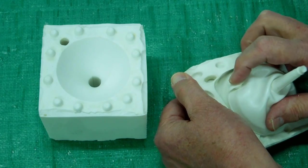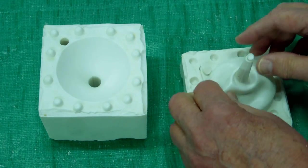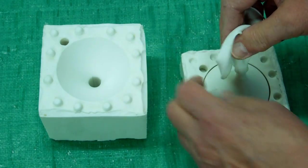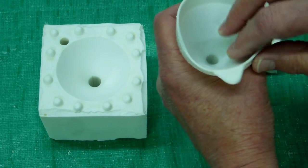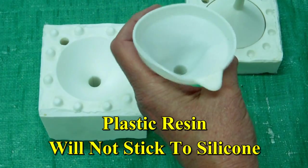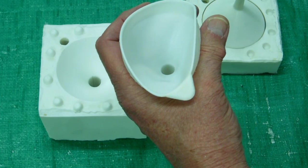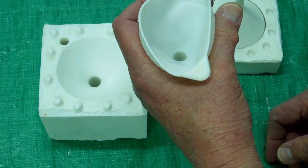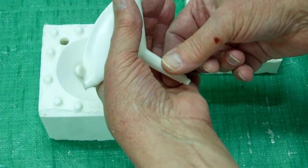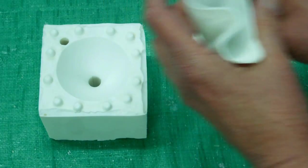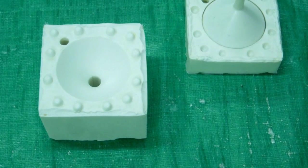I had a little trouble getting this part out of the mold. Actually, I expected some problems with that. But the idea was to be able to hold this, pour resin in here, and when the mold filled, you'd be able to squeeze this and shut it off so you didn't spill resin all over the place.